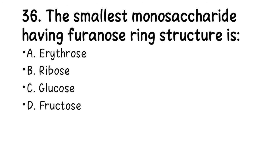Number 36. The smallest monosaccharide having a pyranose ring structure is: A. Erythrose, B. Ribose, C. Glucose, D. Fructose. Think of which option has the smallest possible ring structure. The right answer is B, ribose.